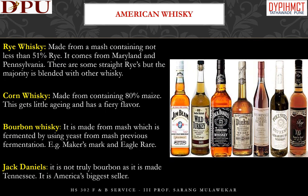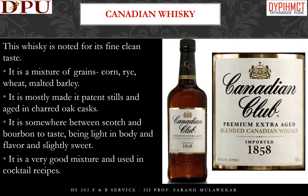American whiskey types: Rye Whiskey is made from a mash containing not less than 51% rye and comes from Maryland and Pennsylvania — the majority is blended with other whiskeys. Corn Whiskey is made from a mash containing 80% maize, gets little aging, and has a fiery flavor. Bourbon Whiskey is made from mash fermented using yeast from a previous fermentation. Jack Daniel's is not truly bourbon as it is made in Tennessee and is America's biggest seller.